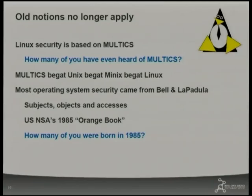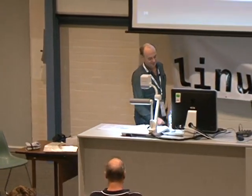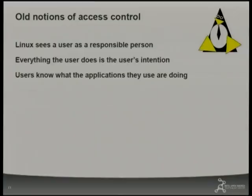These notions that we've been working with are falling aside. We have our old notions of access control. Linux sees a responsible person out there — if you're running programs, they're linking with libraries, doing things on the screen. Linux thinks it's your fault if you don't like what you see. It's your fault if that program does something you don't want it to do. Why did you choose to run the application?